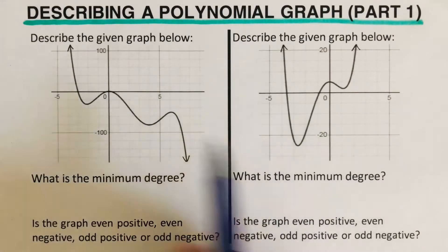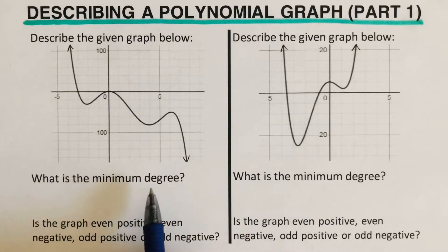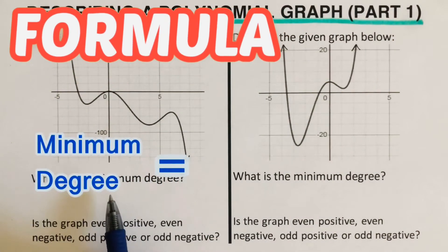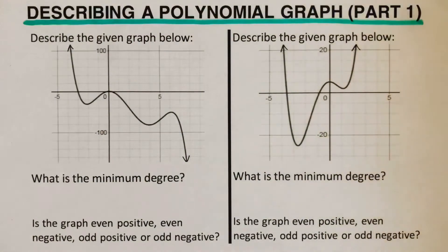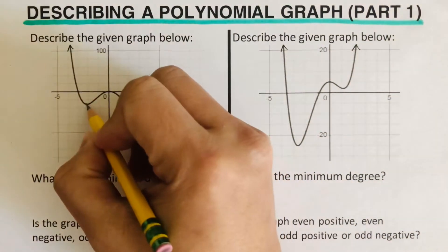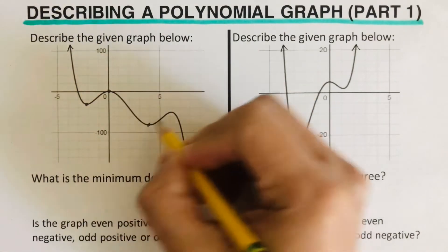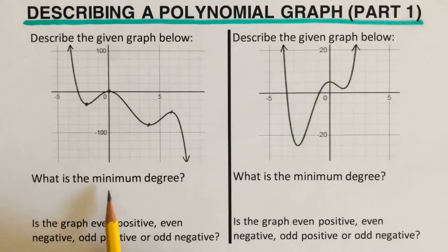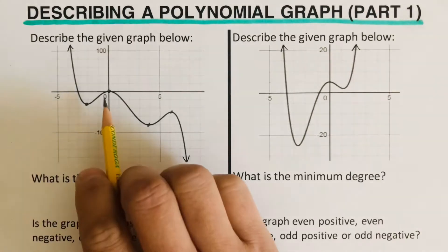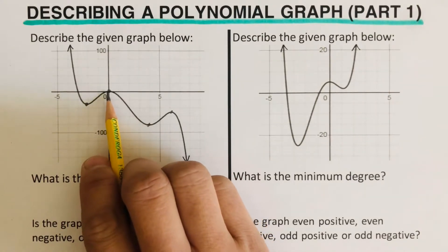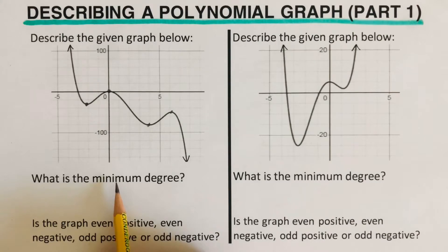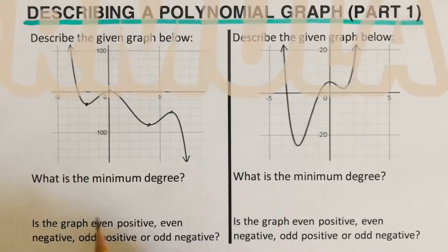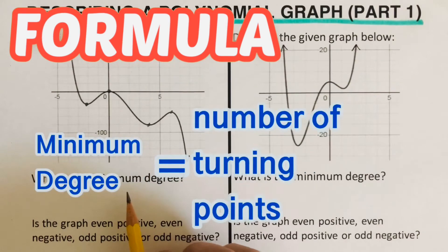Going back to the two examples we have here, let's take the first one. What is the minimum degree of this polynomial graph? The formula for minimum degree is: minimum degree equals the number of turning points plus one. When we say turning points, we are referring to these specific points on the graph. We use minimum degree because in some cases there can be multiplicity, meaning there can be more factors at a certain point, so we don't consider multiplicity in this formula.